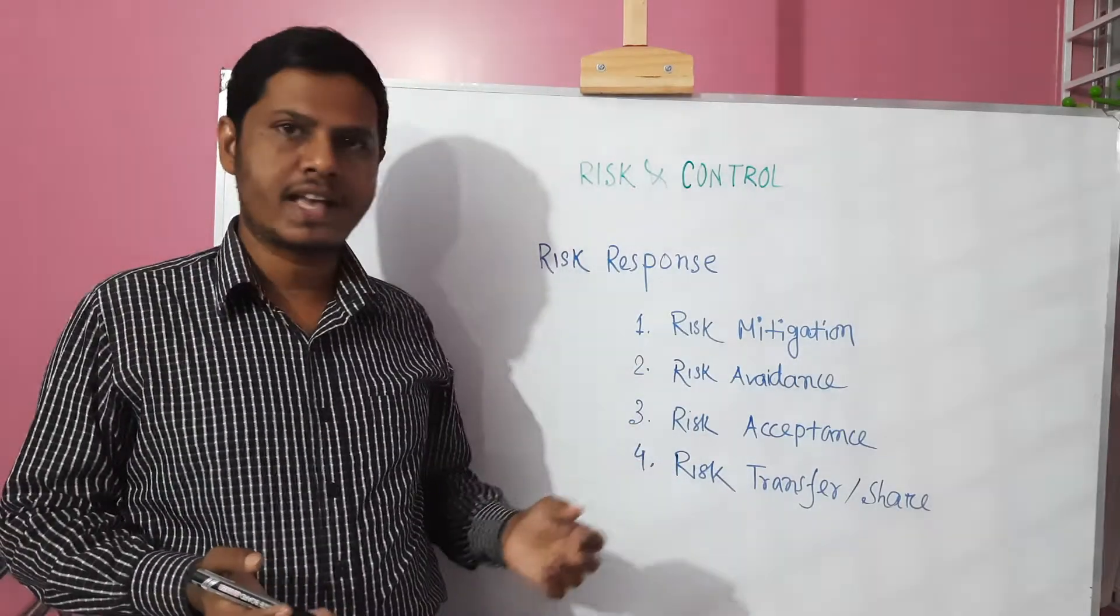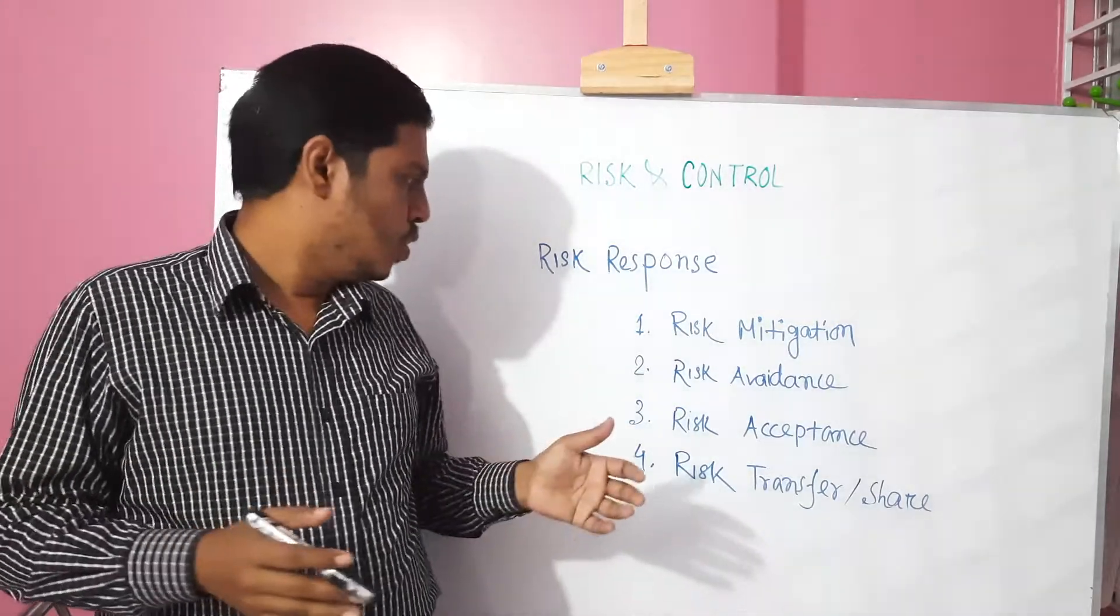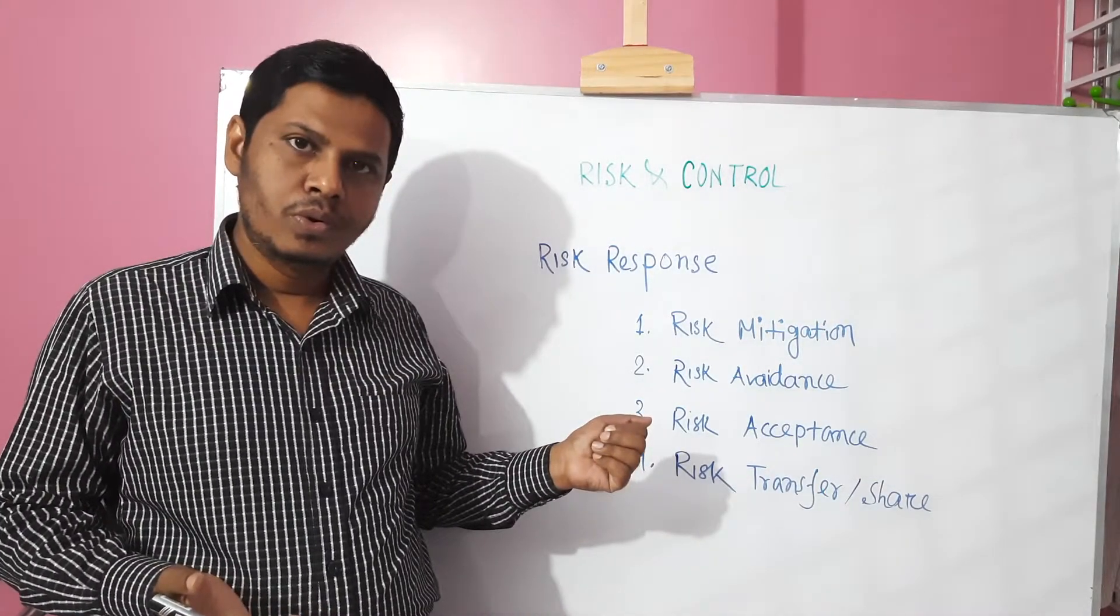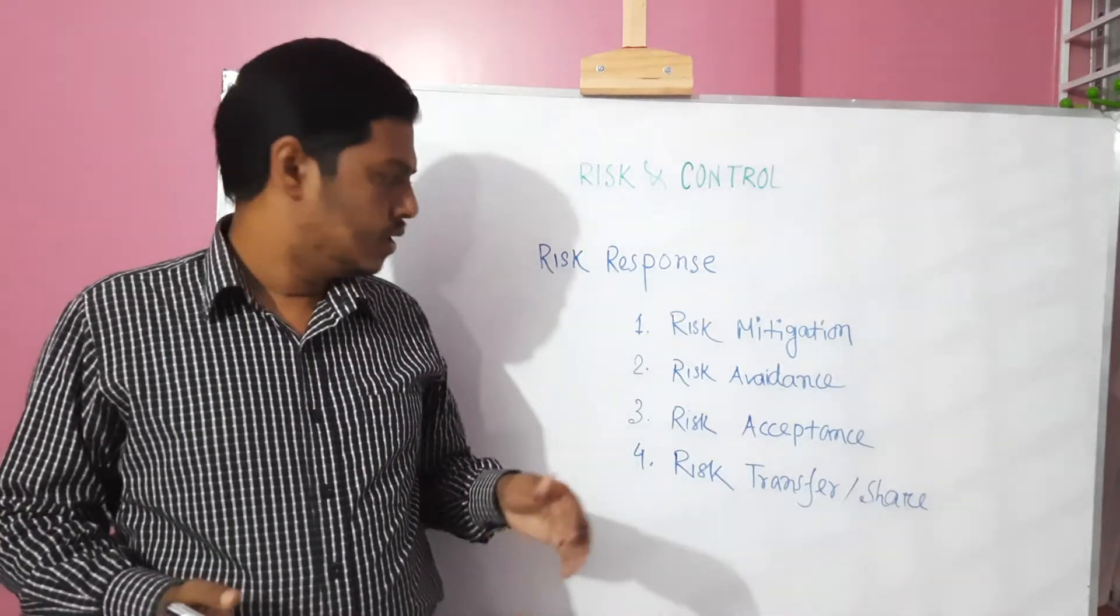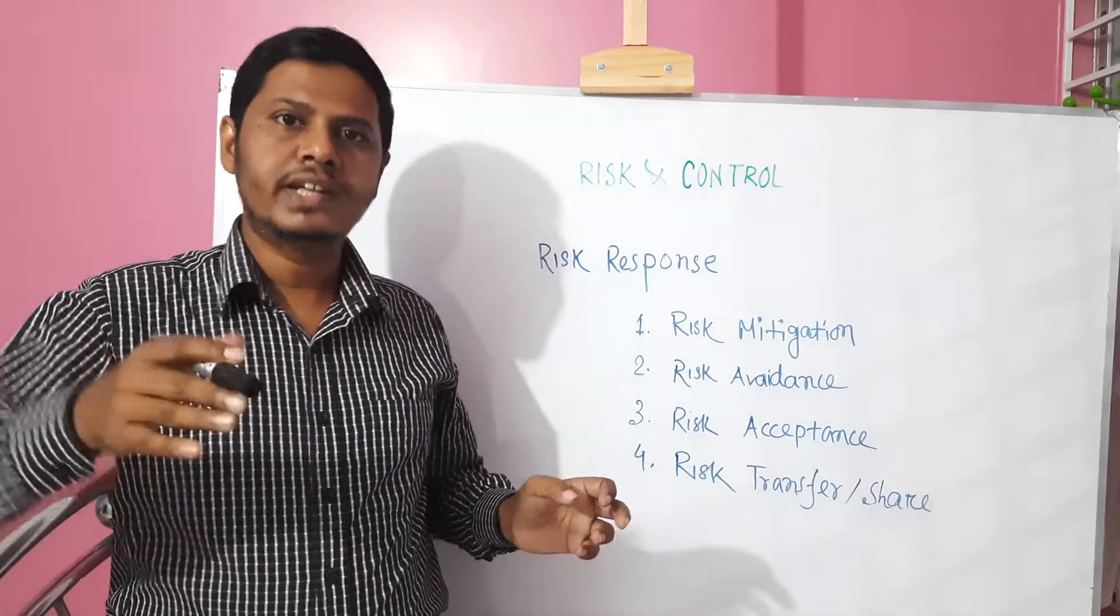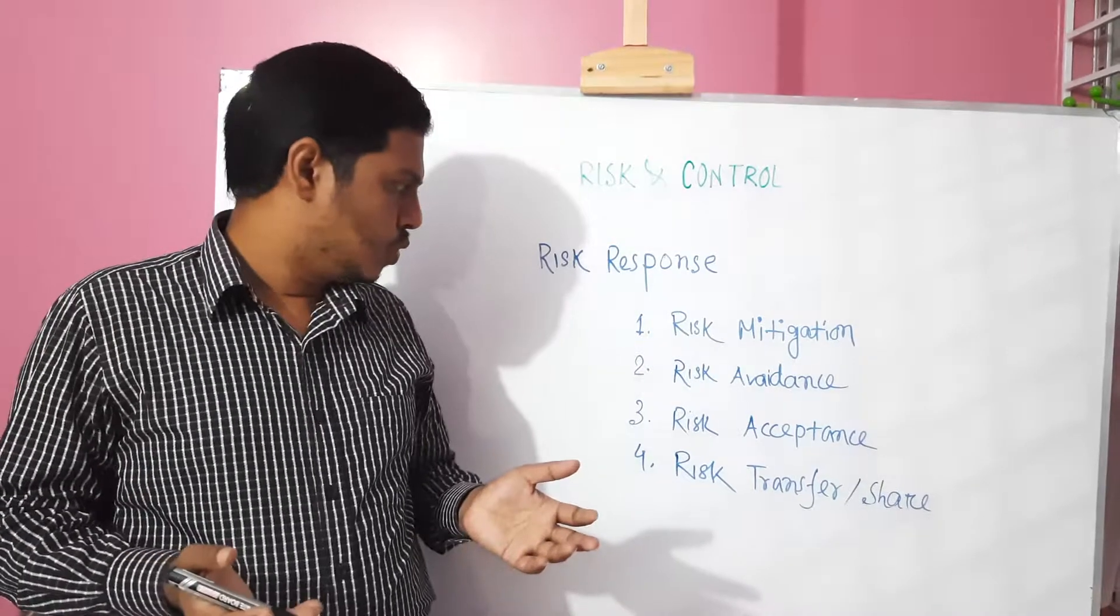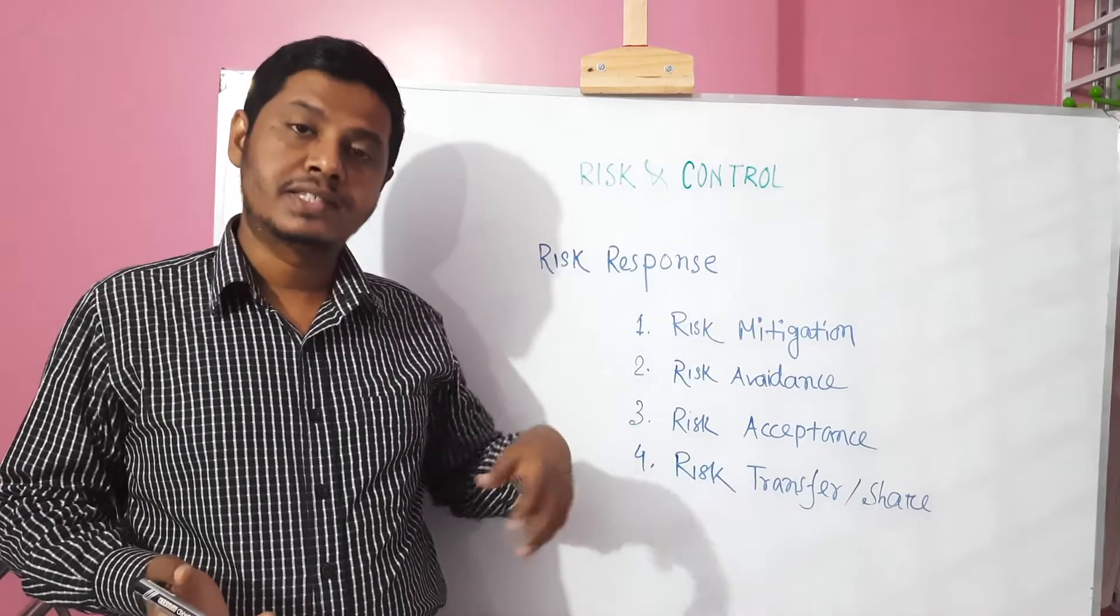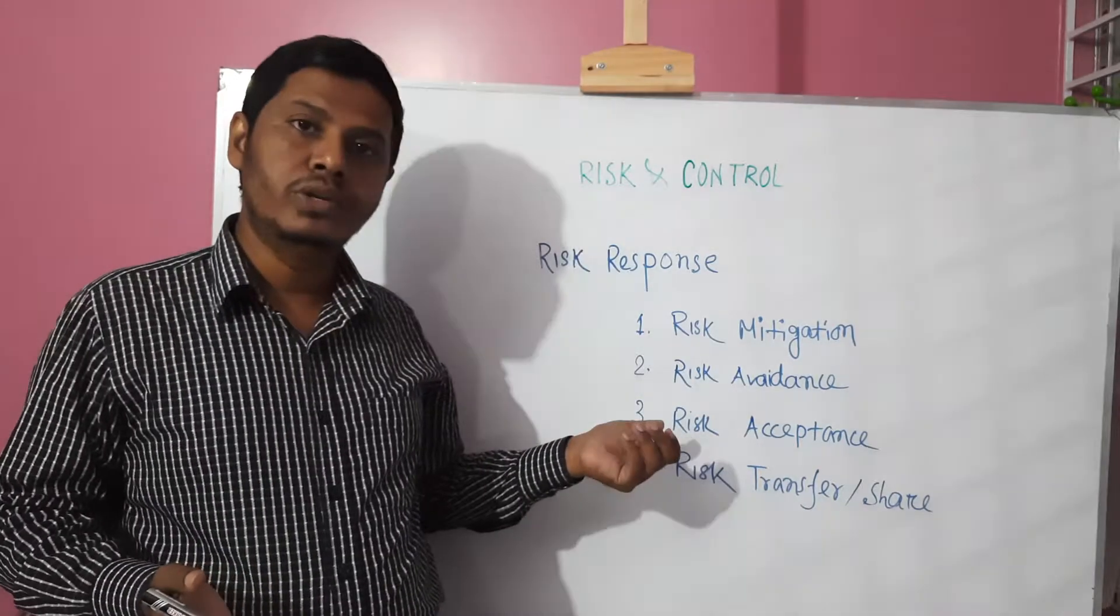Third number, risk acceptance. That management takes the decision that they will accept the risk. When actually management takes the risk, when the asset value is less than the control cost, risk acceptance is when management takes the decision that we accept the risk. When the asset value is high, is more than the control cost, then we do not take the risk acceptance.